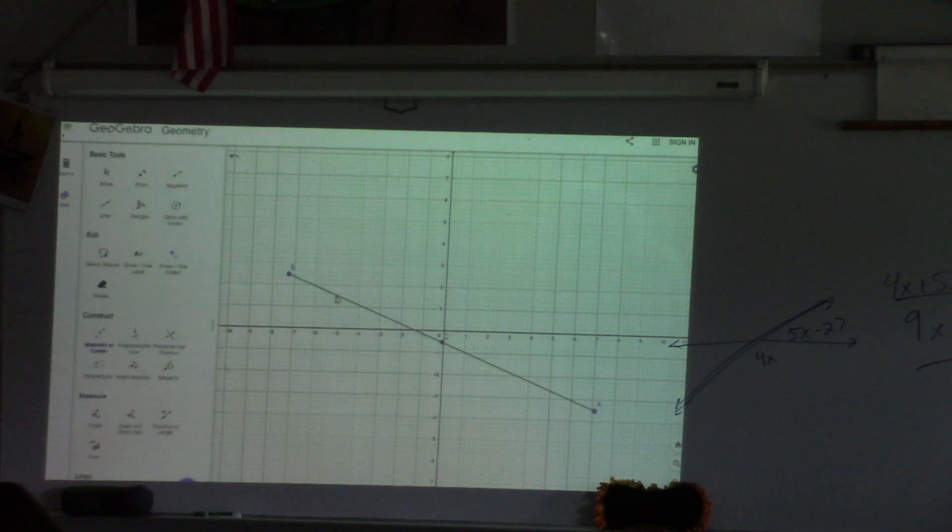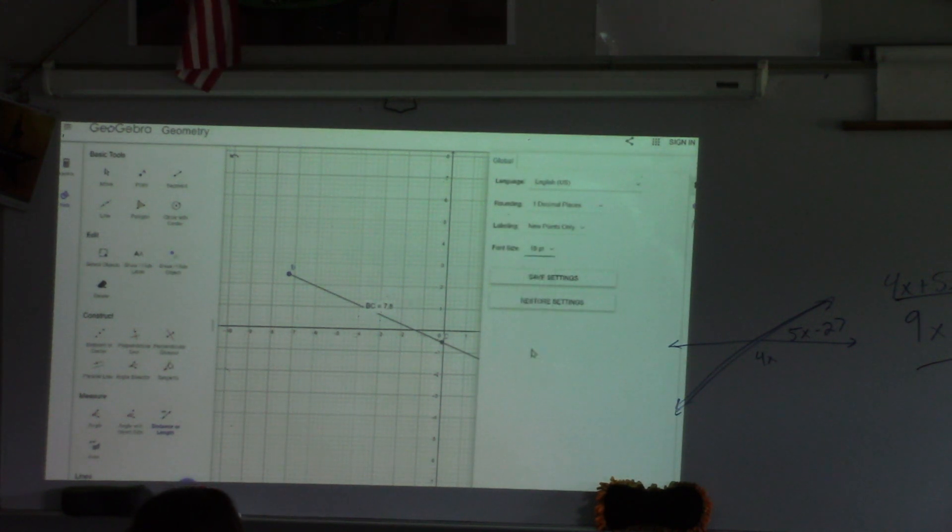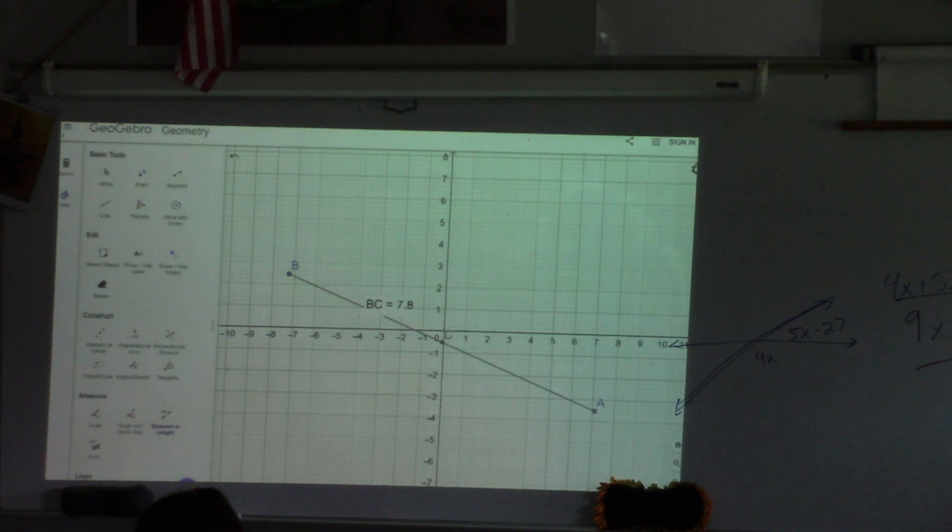So it tells us how to measure length. Under more, where am I going to look to be able to measure length? Is it measure? Do you see measure? And it says distance or length? When you click on that, it's going to give you exactly what to do, but it tells you to select two points. So how far is it for me from B to C? Actually, let me make that bigger so you can see it. Can y'all see that more easily?